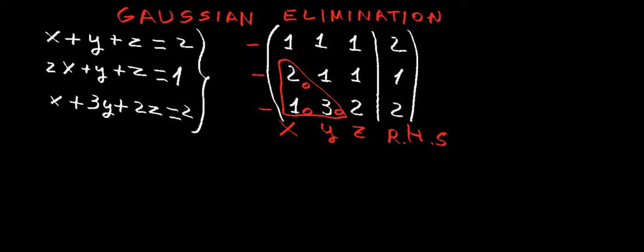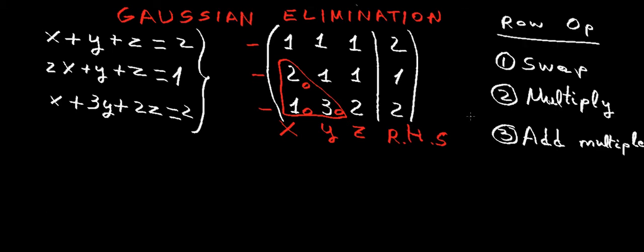We're going to do that by using row operations. The row operations we are allowed to perform on this matrix are: first, swap two rows; second, multiply or divide any row by a number — every operation has to be performed on every single value of that row; and third, add a multiple of a row to another row — for example, 2 times row 1 plus row 2.